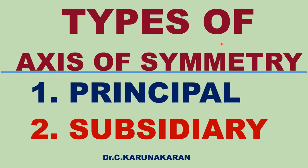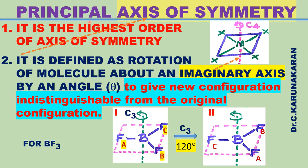There are two types of axis of symmetry: one is the principal axis of symmetry, and the other is the subsidiary axis of symmetry. The principal axis of symmetry is the highest order of axis of rotational symmetry.